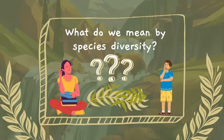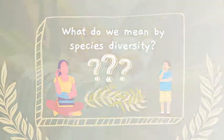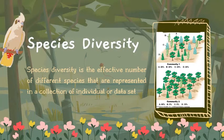Now let us dive into our main goal, which is to discuss and understand what species diversity is. According to a book, species diversity is the effective number of different species represented in a collection of individuals or data set. Species diversity talks about the number of species currently present in a specific place or community.